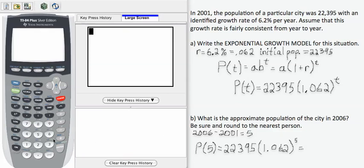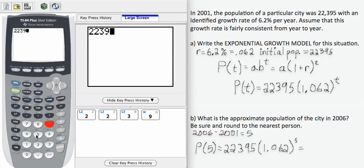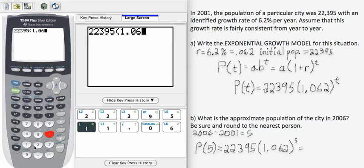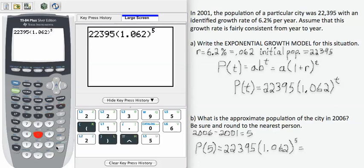Let's plug that into our calculators. So 22,395 times 1.062 raised to the 5th power equals this number here. I want to round that to the nearest person. If I do that, I'm going to get 30,253 people in this city in 2006.